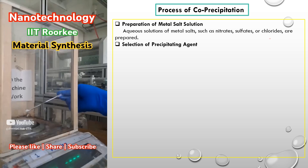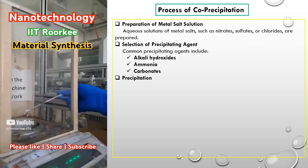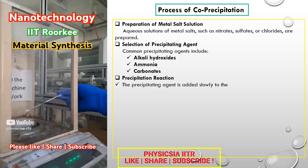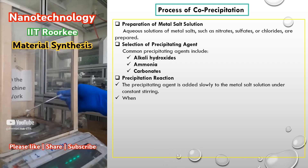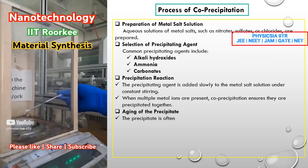Step 2: Selection of Precipitating Agent — common precipitating agents include alkali hydroxides, ammonia, and carbonates. Step 3: Precipitation Reaction — the precipitating agent is added slowly to the metal salt solution under constant stirring. When multiple metal ions are present, co-precipitation ensures they are precipitated together.